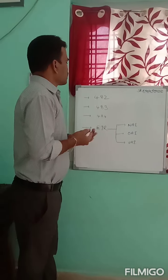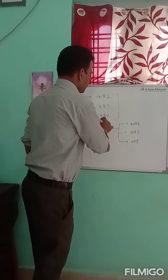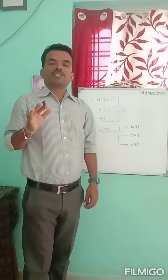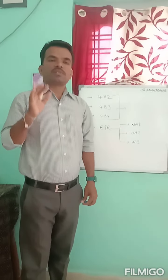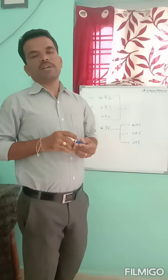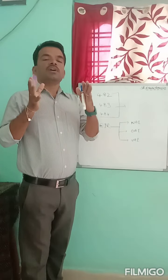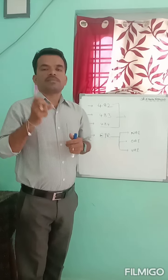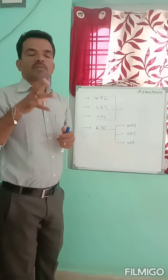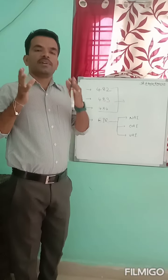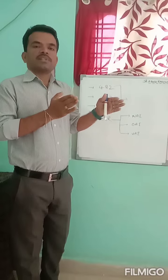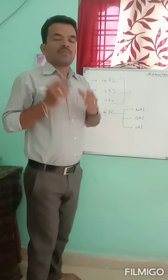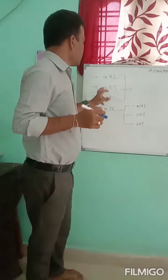Form 483 is the most important among these three forms. After the FDA inspectors complete the inspection of a certain manufacturing site, they will discuss everything together at the closing meeting. When they are not satisfied with some findings, observations, or abnormalities found during the inspection, they will discuss with the manufacturing site management.